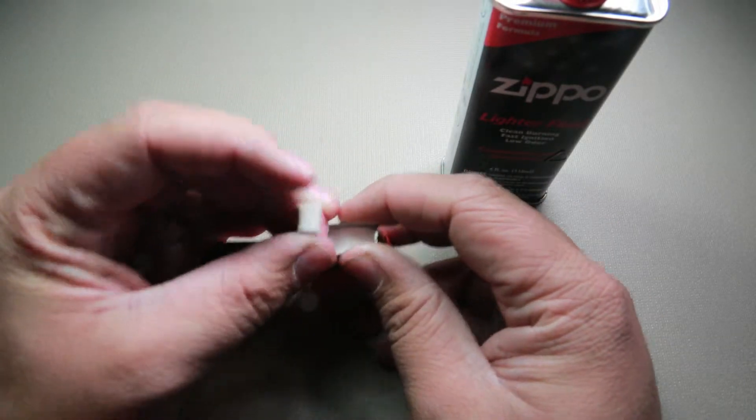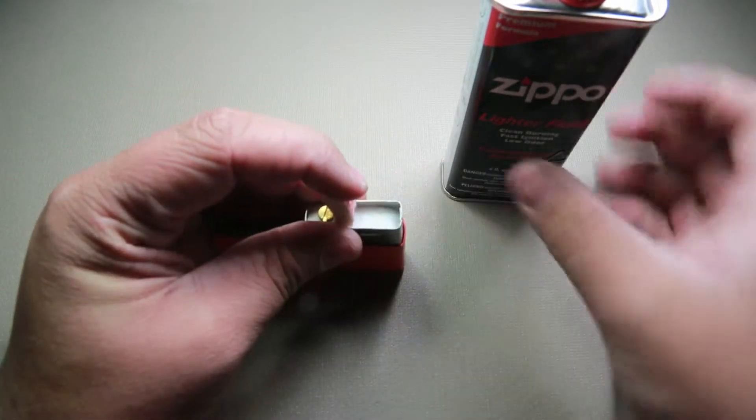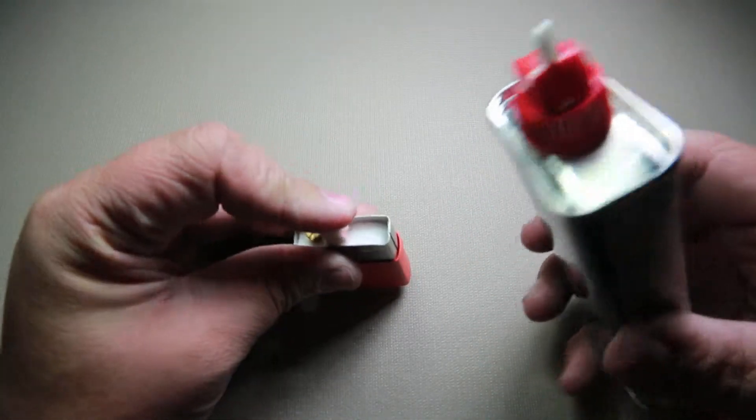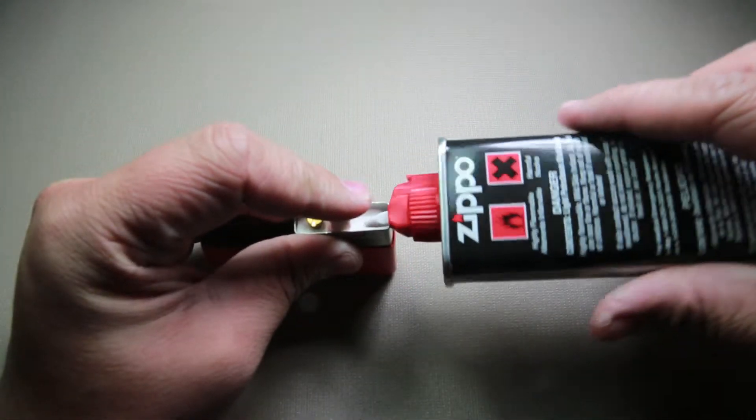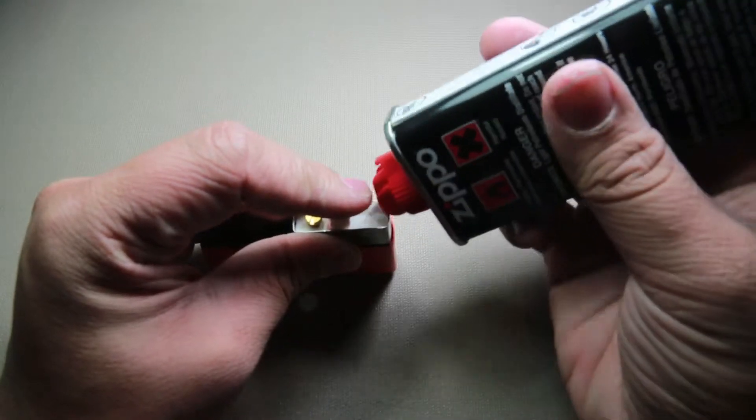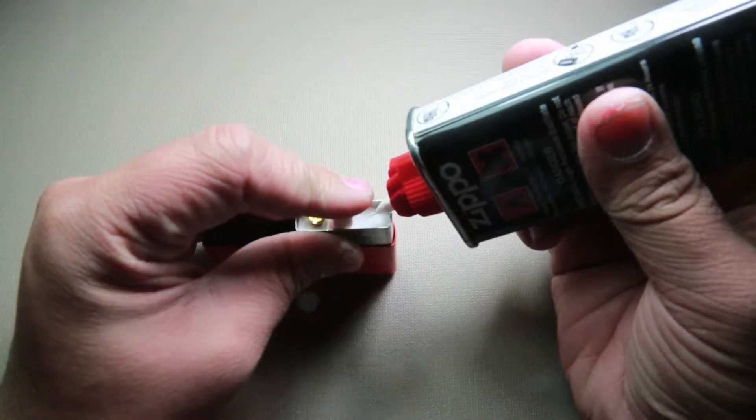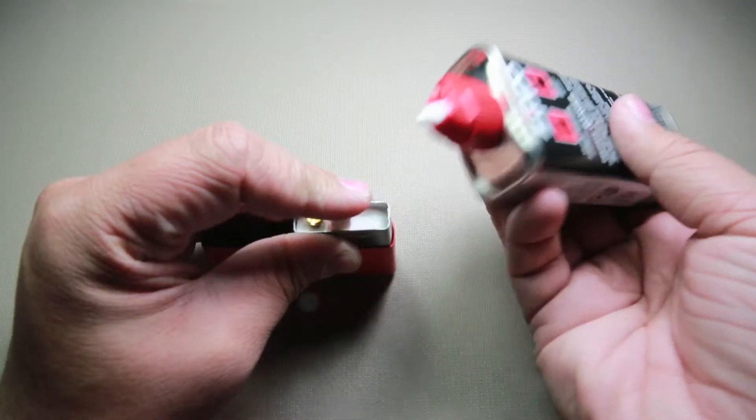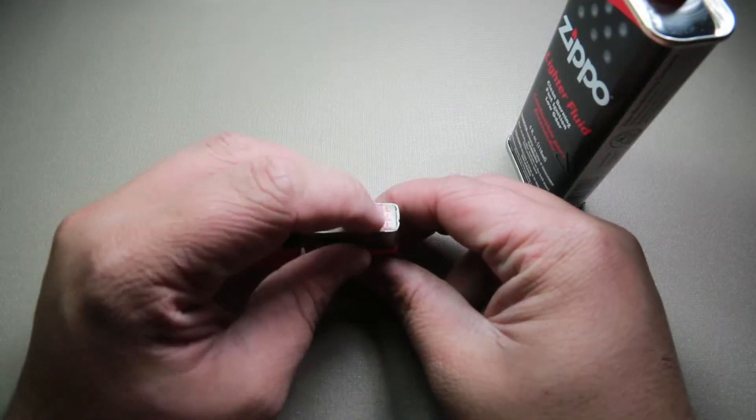Pull that up and then you just want to hold it up like this. Then you want to grab your Zippo can of fluid or Ronson, whatever you're using, and you just want to drip it in there. You want to squeeze for about five seconds: one, two, three, four, five. Now just let it sit for about five seconds.